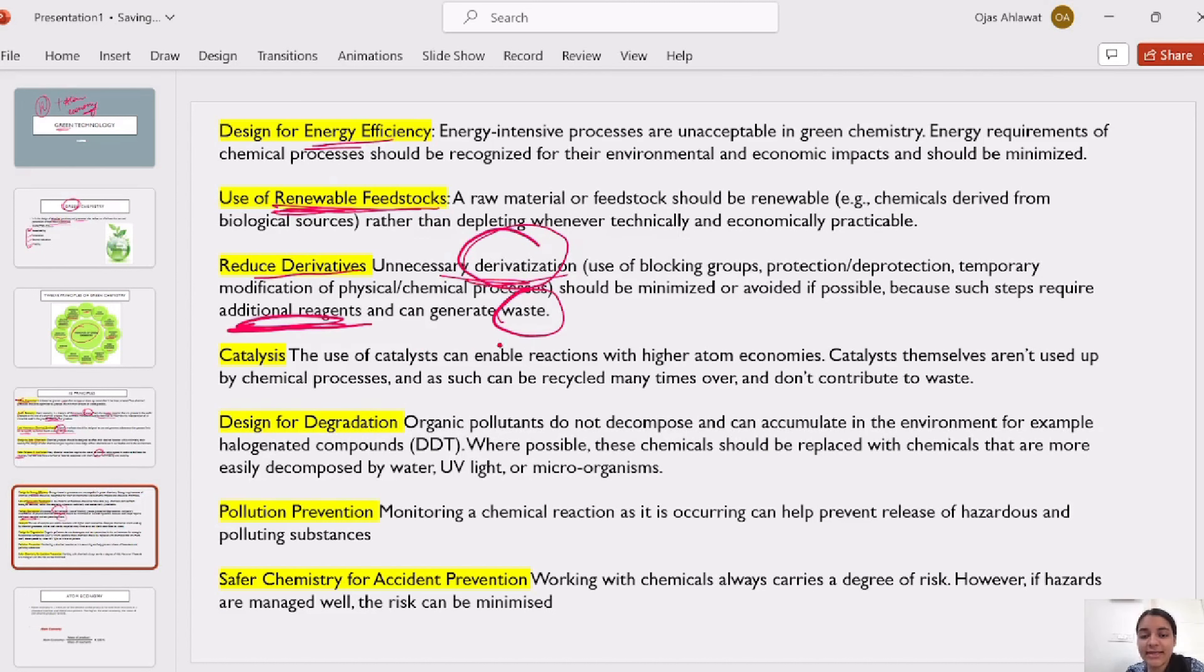Catalyst, which can be used in chemical processes, or reuse or waste, which can be used in chemical processes. Design for degradation. That means, organic pollutants, they do not decompose. For example, DDT. You have to replace such chemicals, which can easily be decomposed. That means, insecticides, whatever you are using.